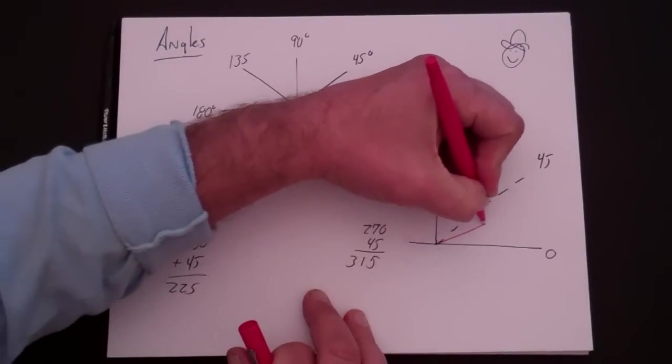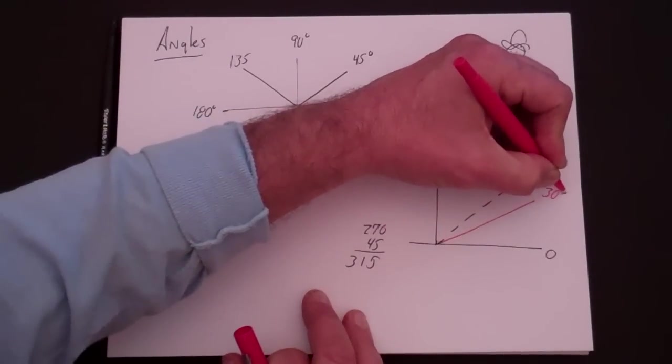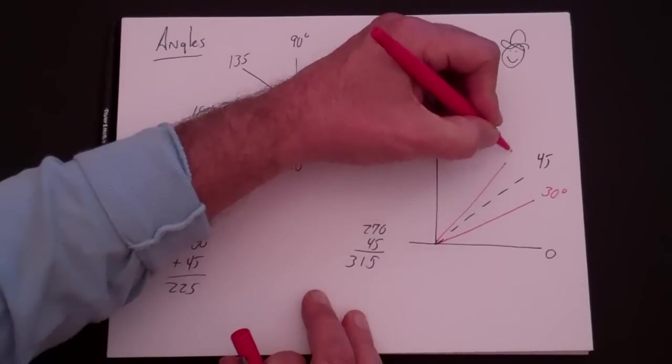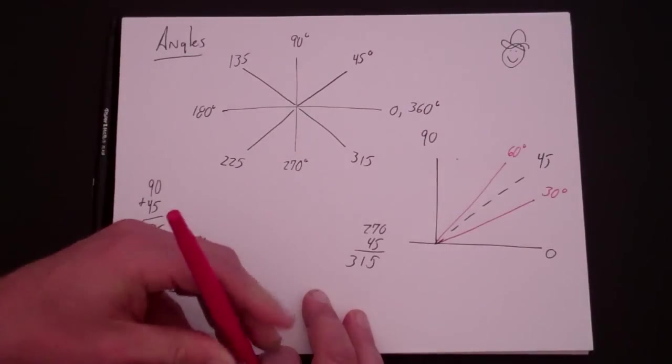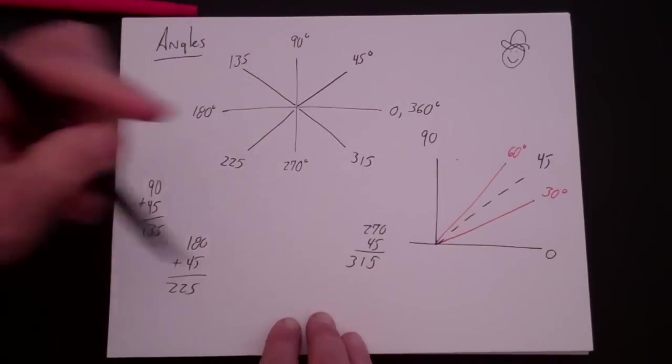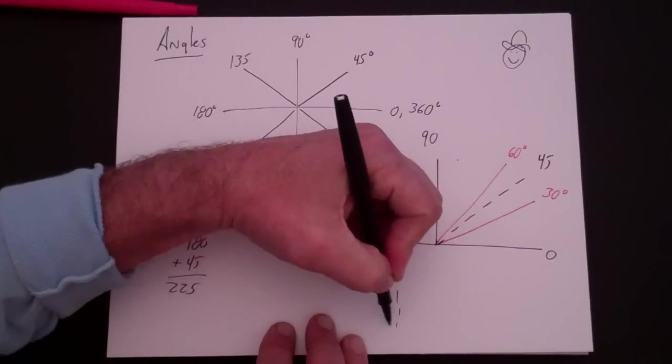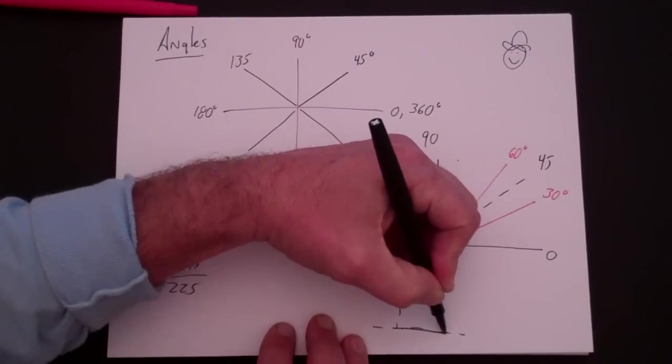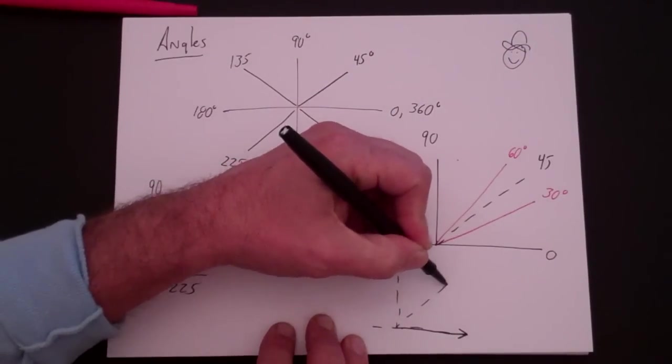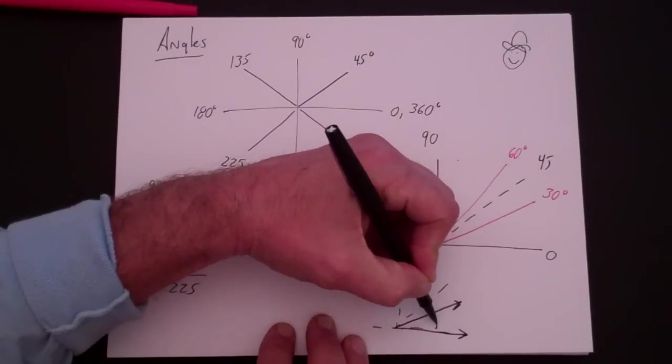Then 30 degrees is going to be a little bit less than that, and 60 degrees a little bit more than that. So you always want to remember that. If you want to draw those out separately so you can kind of see them. Again, this is what a 30 degree, if this is 45, this is what a 30 degree angle looks like.